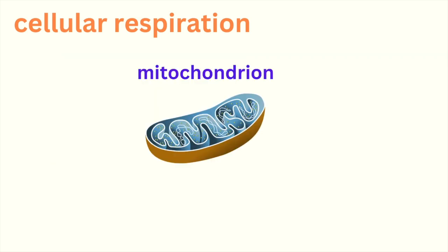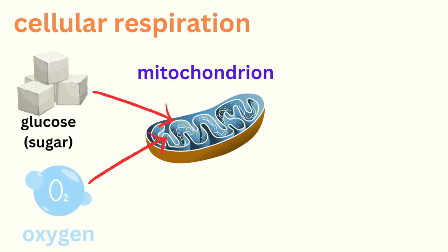Cellular respiration needs three things: glucose from food, oxygen from the air we breathe, and enzymes inside our cells that speed up the process.